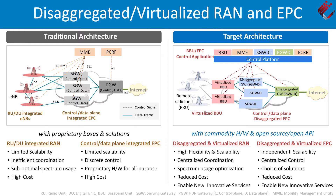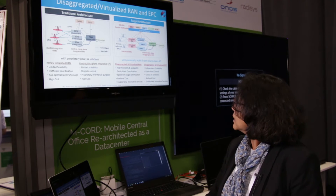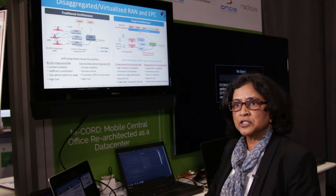On the EPC side too, you have similar advantages because of the disaggregated and virtualized EPC. You have the ability to scale independently, because now you have SDN where the data plane and control plane are disaggregated, so you can scale them separately. You have centralized control again, and also a choice of solutions, so you can match the solution to your needs. And with disaggregation, you bring in new innovations and reduce cost.